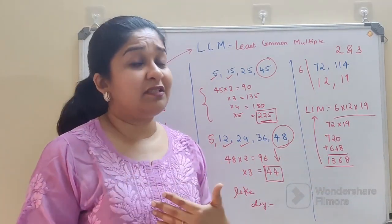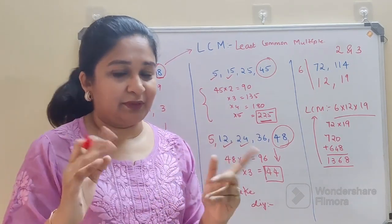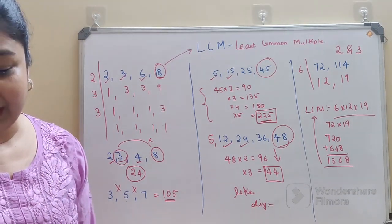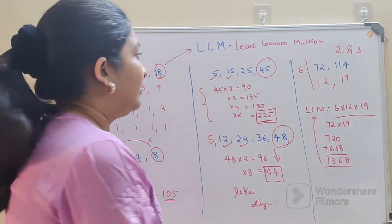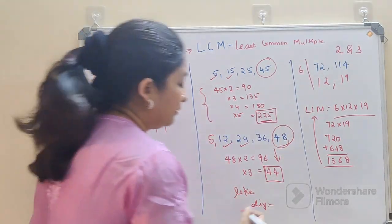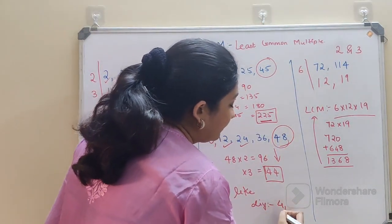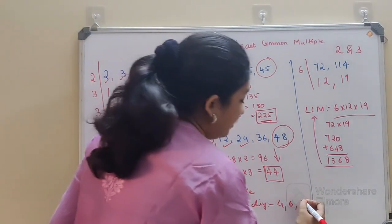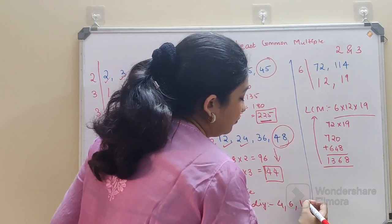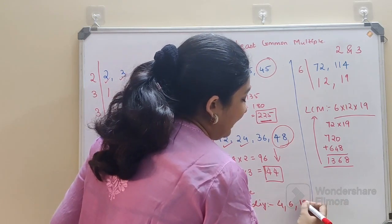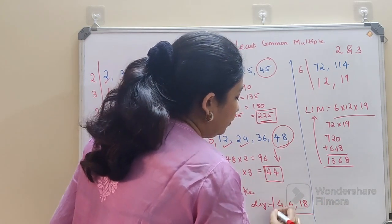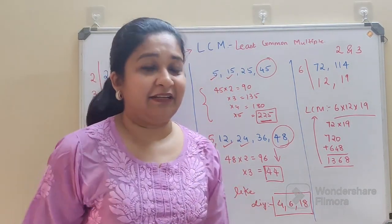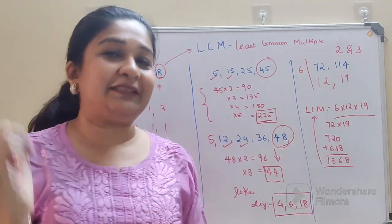I hope you're getting the hang of it. Please click the like button — it gives me a lot of encouragement for making these videos. For your DIY question today: find the LCM of 4, 6, and 18. Let me know your answers in the comment section. That's it for today — I'll see you in the next video.